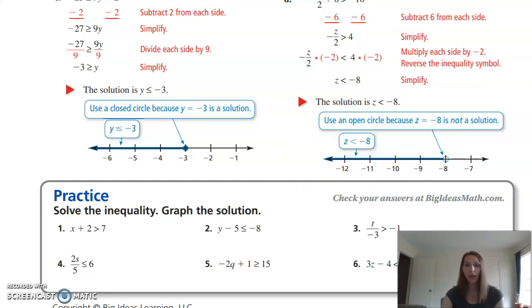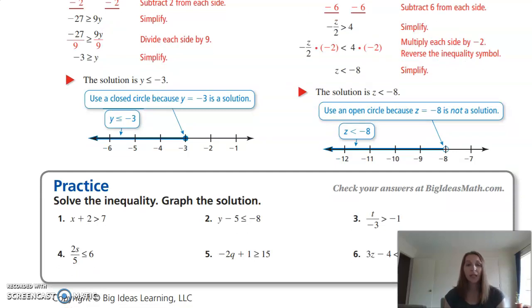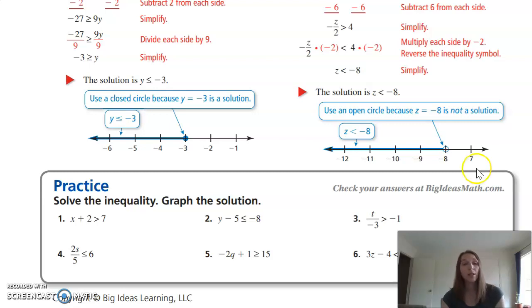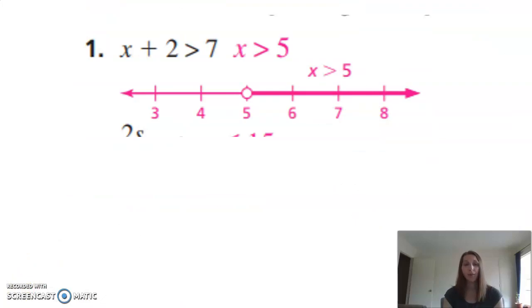Now for the practice problems — we'll do problems 1, 3, and 5. The instructions say to solve the inequality and graph the solution. If you don't have room, just solve the inequality; if you have space or extra paper, complete the graphs as shown in the examples. Problem 1: x + 2 > 7. Subtract 2 from both sides, leaving x > 5. It is an open circle at 5, shading everything greater than 5.